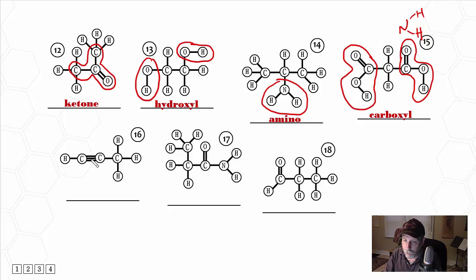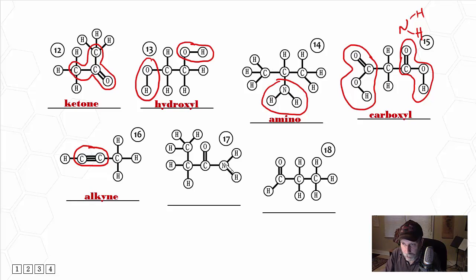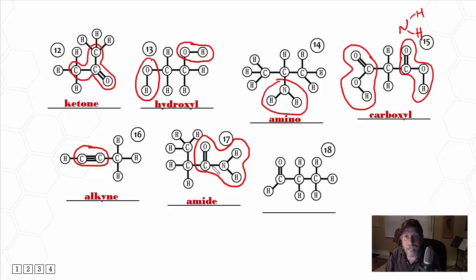Number 16: as soon as you see the C with the triple bond, you know that is an alkyne. Number 17: again we have NH2, just like in number 14, but in number 14 the NH2 group was connected to just carbon with a bunch of hydrogens and other carbons attached. Here, this amino group is attached to a C double bond O H. So now it has a different name — it's not called amino anymore; it's called amide. This molecule is a type of amide. You have to be very careful and look at what is attached to the amino group, and then it may change the name. Number 18: C double bond O H, hydrogen on one side of that carbon, carbon group on the other — this is an aldehyde again.